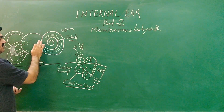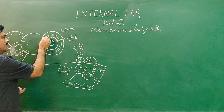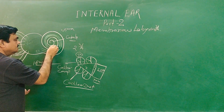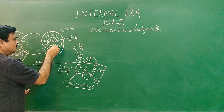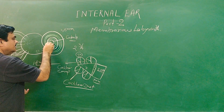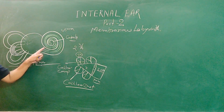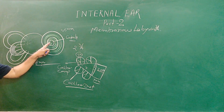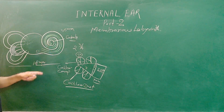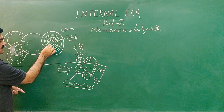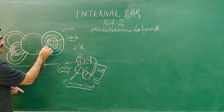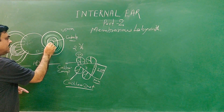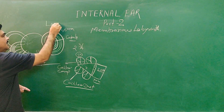If you remove the bone from this side, you can see easily this cochlear duct. Here you can see this cochlear duct — at the apex, at the tubular end, it is blind. This cochlear duct is blind. Here is the cochlear duct.